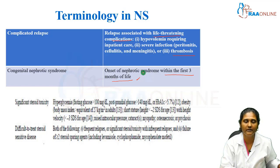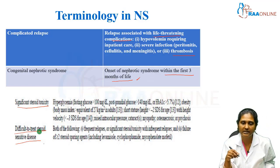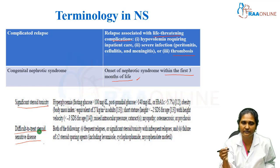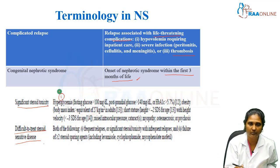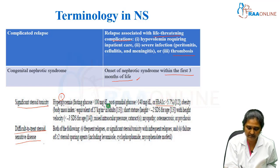Two more terminologies you should know in the context of nephrotic syndrome are significant steroid toxicity and difficult to treat steroid sensitive disease. Since the child is on long-term steroids, you should be looking for signs and symptoms suggestive of steroid toxicity. The significant steroid toxicity features include: hyperglycemia — fasting glucose more than 100 milligram per deciliter, or postprandial more than 140 milligram per deciliter, or HbA1c more than 5.7. When these criteria are fulfilled, it is hyperglycemia.